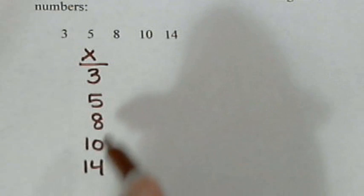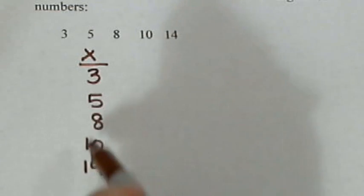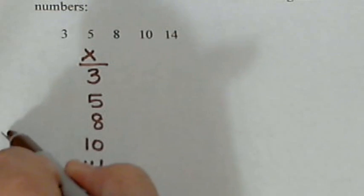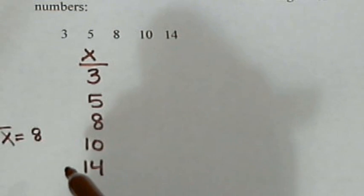Now, the first thing we need is the mean of these numbers. If I add these up, 3 plus 5 plus 8 plus 10 plus 14, we get a total of 40. And there are five numbers. So, 40 divided by 5, that gives me a mean of 8.